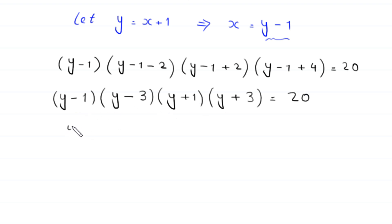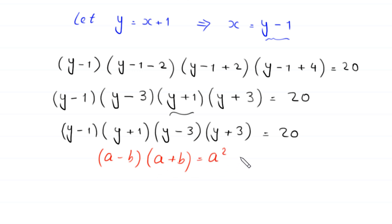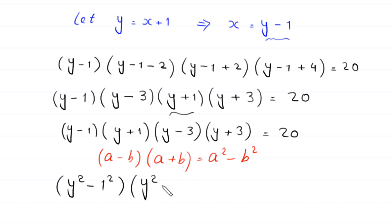We rearrange these terms as (y minus 1)(y plus 1) times (y minus 3)(y plus 3) equals 20. Using the algebraic identity (a minus b)(a plus b) equals a squared minus b squared, this becomes (y squared minus 1) times (y squared minus 9) equals 20.